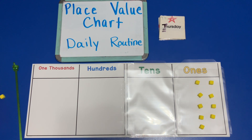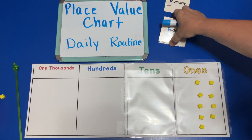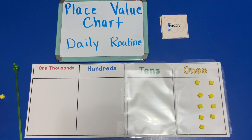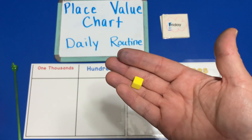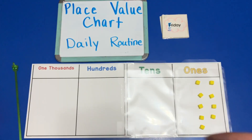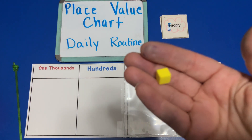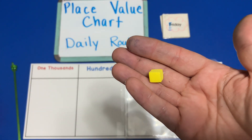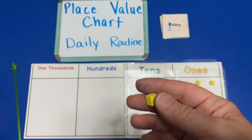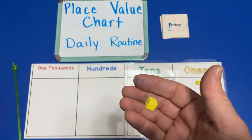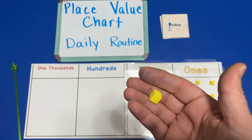Now it's Friday. On Friday we need to put this one unit in our place value chart. But wait — this one unit won't fit in our place value chart today. You can never have more than nine in any place value.